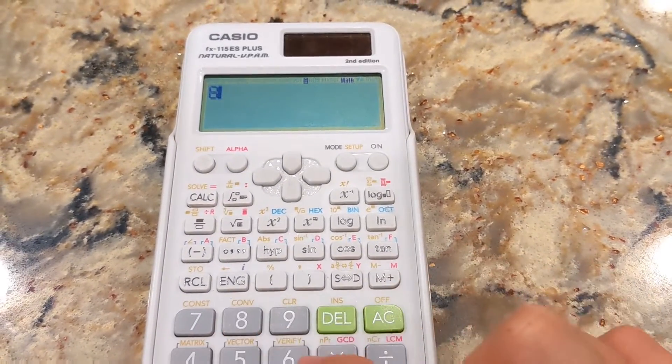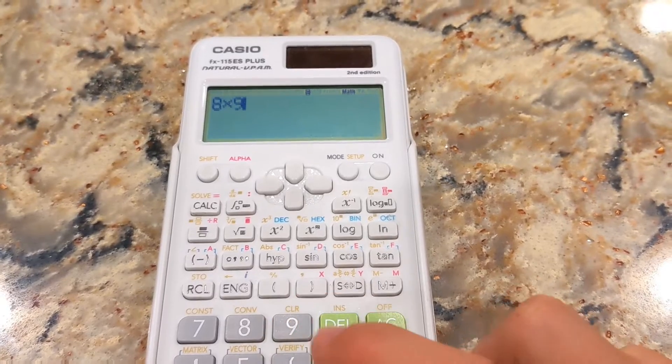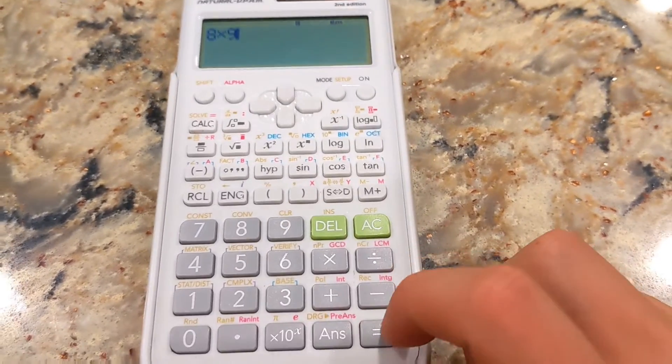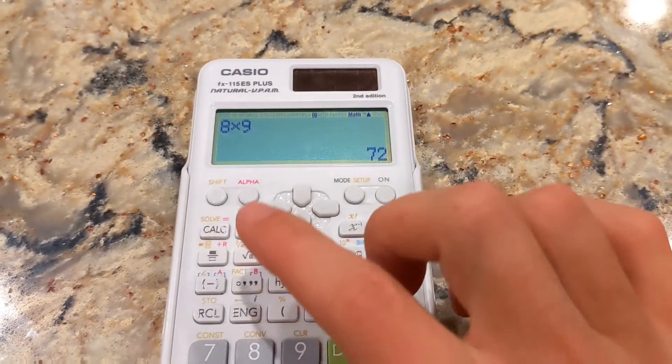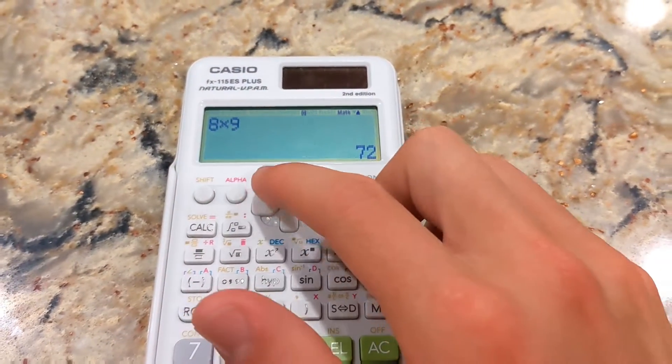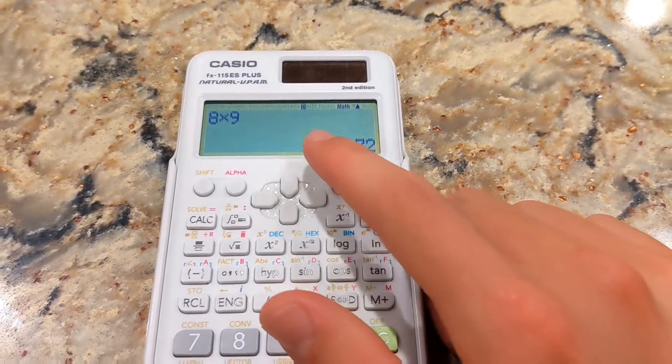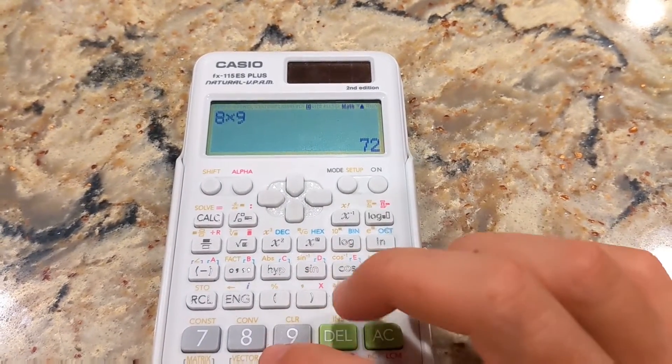And it'll do simple calculations, so like 8 times 9, it's 72. It gives you the equation or expression that you entered into it, and it also gives you your answer.